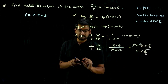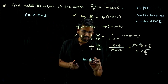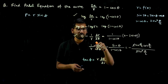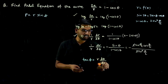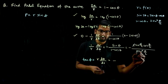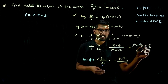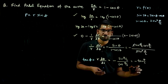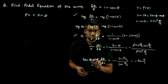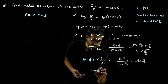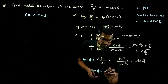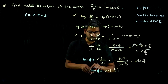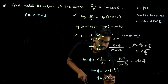We know tan φ = r dθ/dr. Since we have (1/r)(dr/dθ), reciprocating gives r(dθ/dr) = sin(θ/2)/cos(θ/2) with a minus sign, so tan φ = -tan(θ/2). Writing this as tan(-θ/2), since both sides have tan, the angles must be equal: φ = -θ/2.